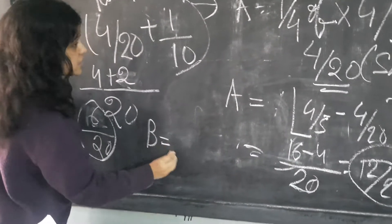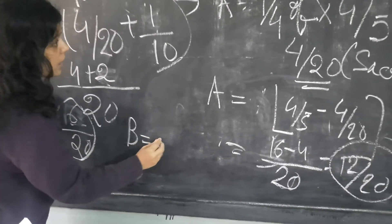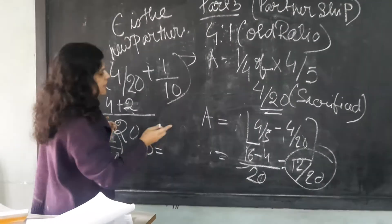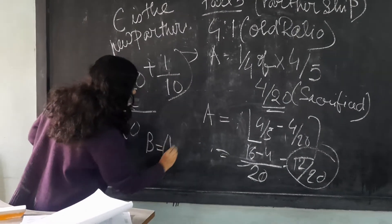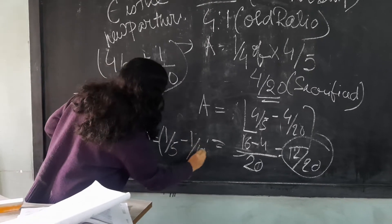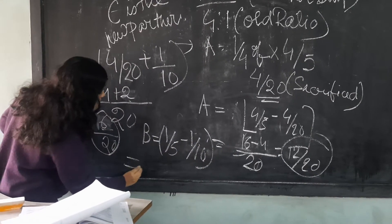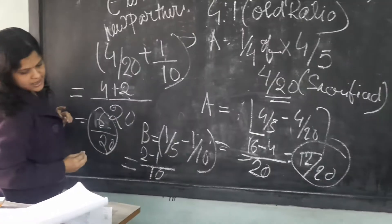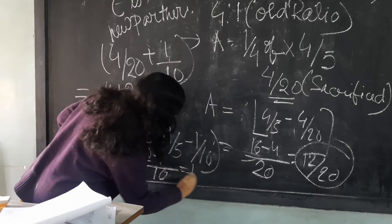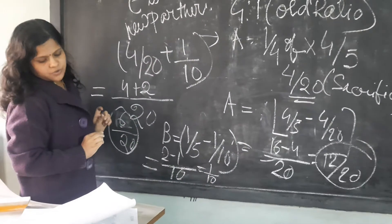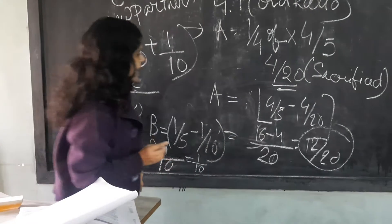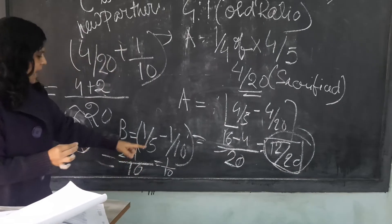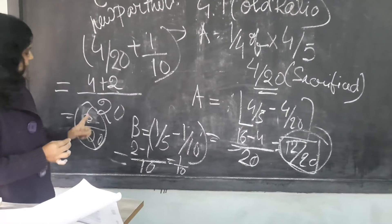Now coming to B. B's initial share was 1 by 5. And B has sacrificed 1 by 10. So B's new share is 1/5 minus 1/10, which is 2 by 10 minus 1 by 10 — that is coming 1 by 10. A's new share of profit is 12 by 20, B's is 1 by 10, and C's is 6 by 20.